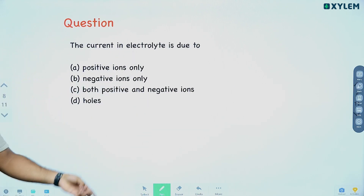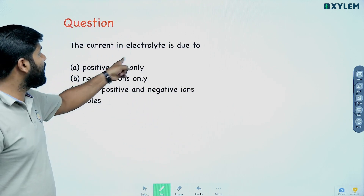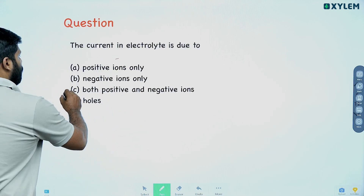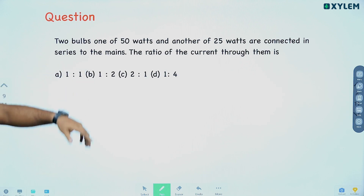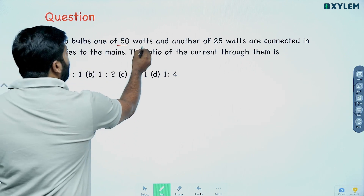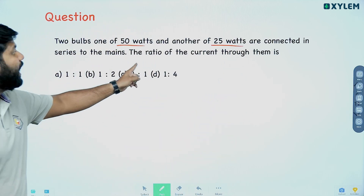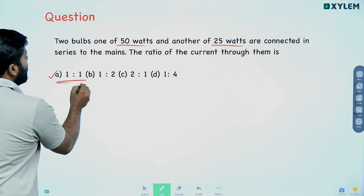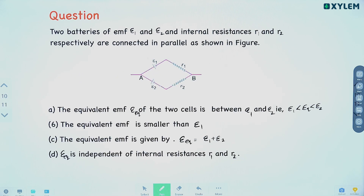The current in an electrolyte is due to both positive and negative ions — so both positive and negative ions contribute to current flow. That is the correct answer. For two bulbs — one of 50 watts and one of 25 watts — connected in series to the mains, the ratio of current through them: in a series connection, the current is the same through both. So the ratio is 1:1.